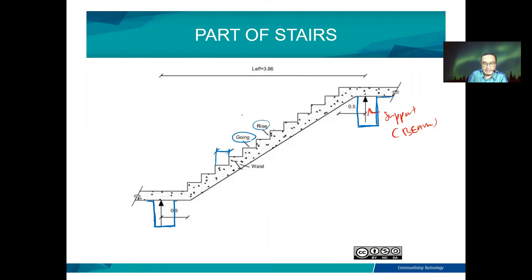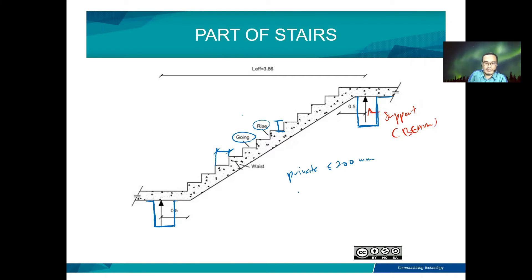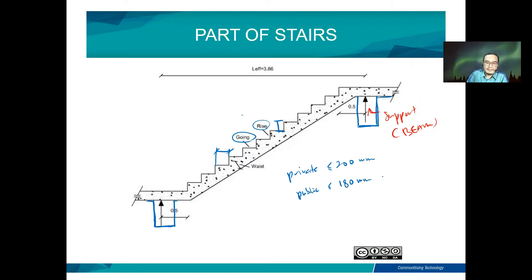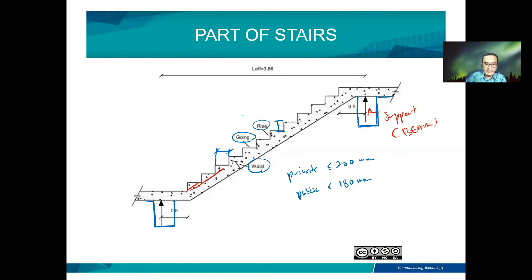As mentioned before, in a private building the rise should be less than 200 mm, but in a public building the limit is lower, which is 180 mm. And this is the waist — from here to here, this is the waist.